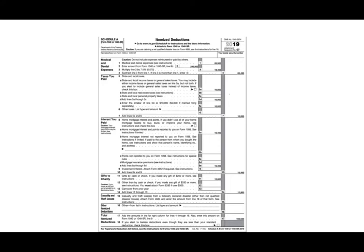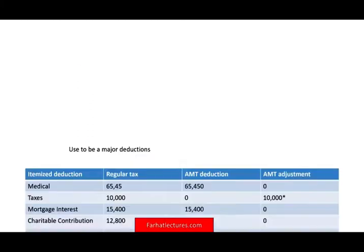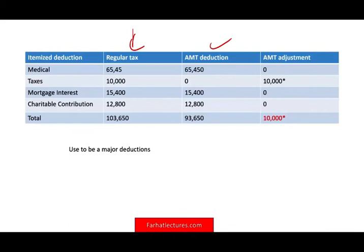Here's Schedule A. Let's assume this individual has medical expenses of $65,450. Taxes paid — the maximum is $10,000. Interest paid: $15,400. Gift to charity: $12,800. Total itemized deductions: $103,650. For regular tax, they can take those deductions. Medical, mortgage interest, and charitable contributions are also allowed for AMT — no adjustment needed. But the state and local taxes cannot be taken for AMT. Therefore, after all is said and done, you add back $10,000 to your AMT.